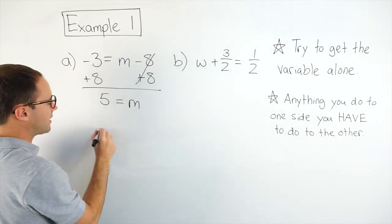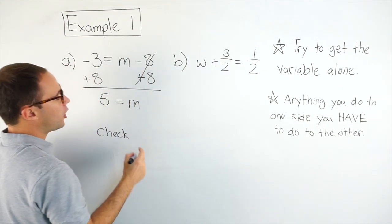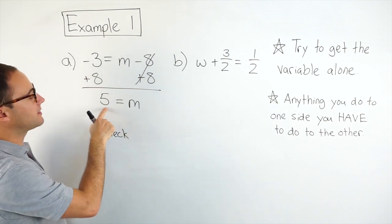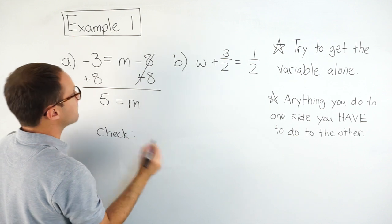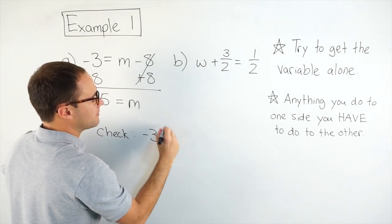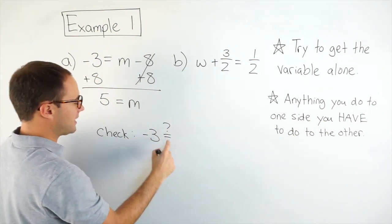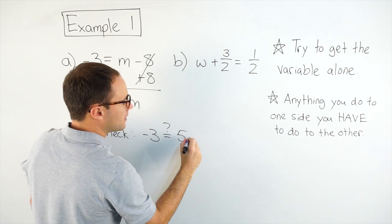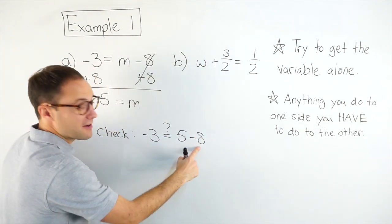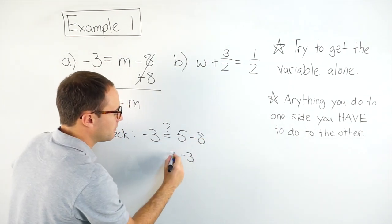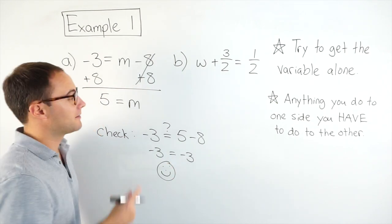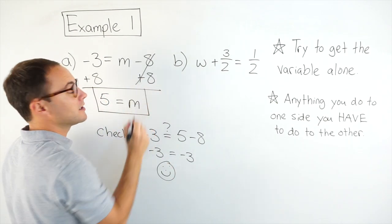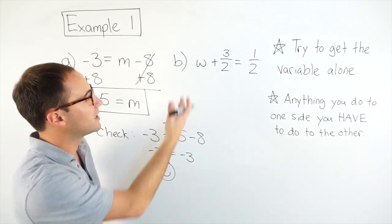So if I want to check, all I do is substitute this 5 back in for m. Because I'm saying m is equal to 5. So my check, I'm saying is negative 3, that's my question mark, is it equal to 5 minus 8? And 5 minus 8 is negative 3, which is equal to negative 3. So we're happy about that. So there is my solution to that equation. Let's try b.